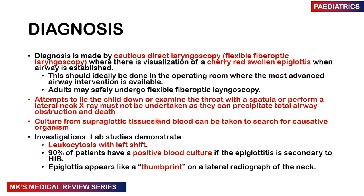Cultures from the supraglottic structures and blood can be taken to identify the causative organism. Laboratory investigations may show leukocytosis with a left shift. 90% of patients will have a positive blood culture if epiglottitis is secondary to Haemophilus influenzae type B, as it spreads hematogenously. On a lateral x-ray of the neck, you may see a thumbprint sign.